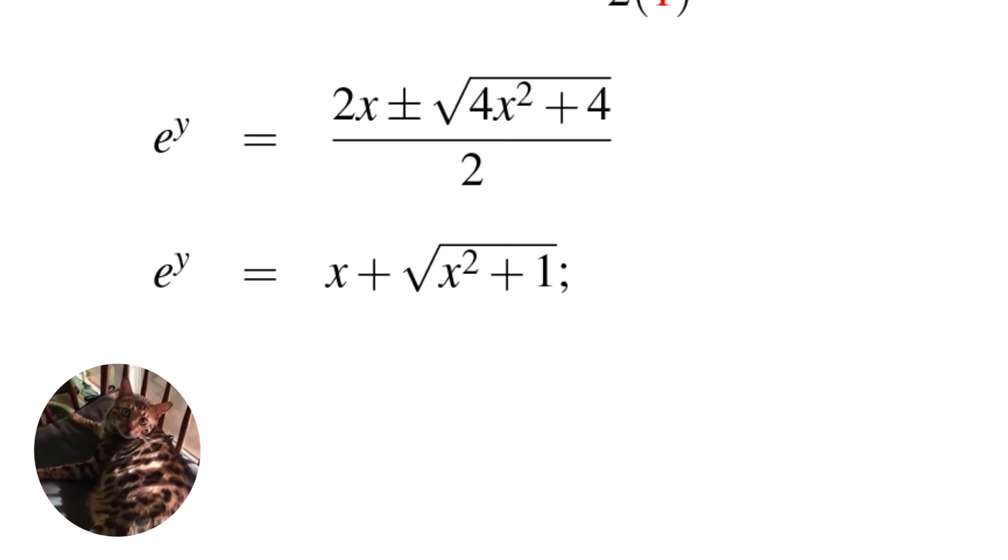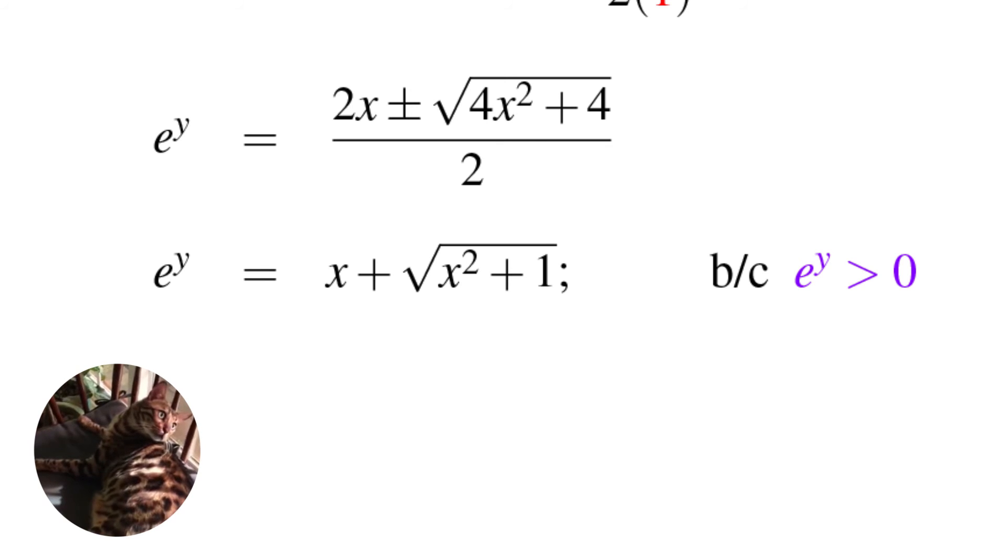And why is that? Why don't I have the minus? Because the square root of x squared would be x, but because I'm adding 1, the square root of x squared plus 1 will be slightly greater than x. Hence, if I were to do x minus the square root of the quantity x squared plus 1, it would be negative. But we know that e to the y is asymptotic to 0 and is always positive, hence I can only have the positive term.